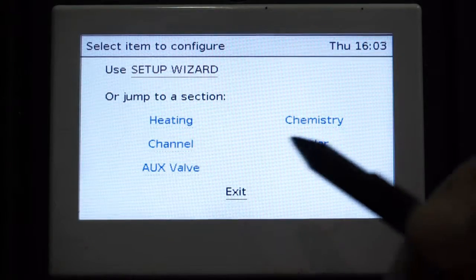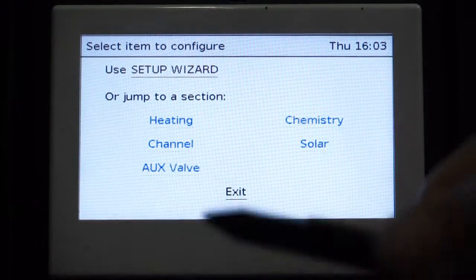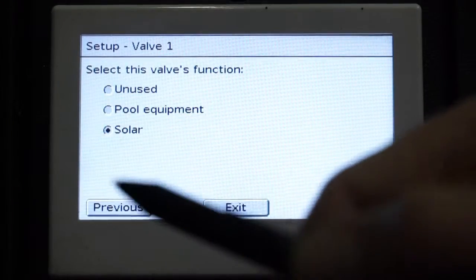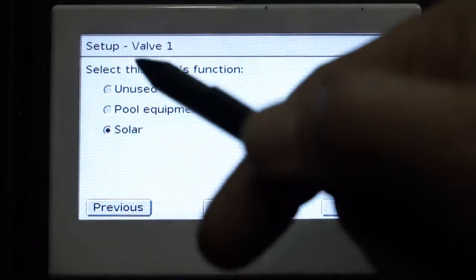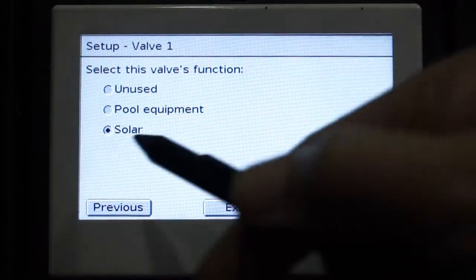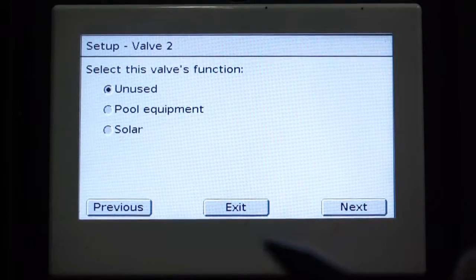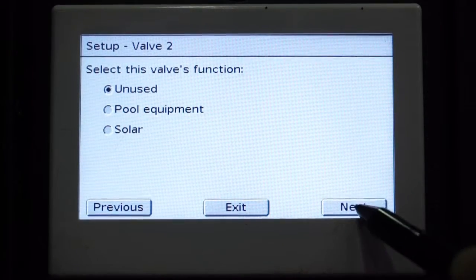Next, now we're back to the main screen here, where we will now select a valve. Our valve one is preselected for us on the solar, which is exactly what we want, and no second valve.